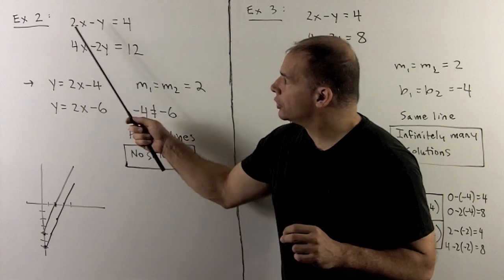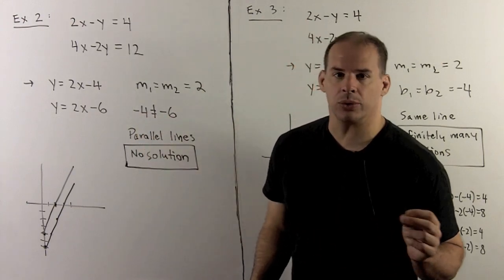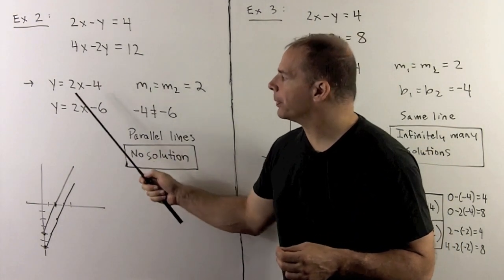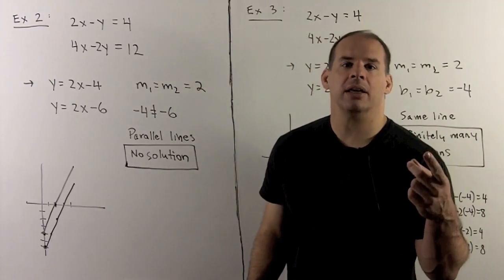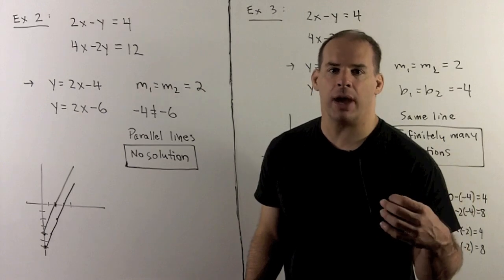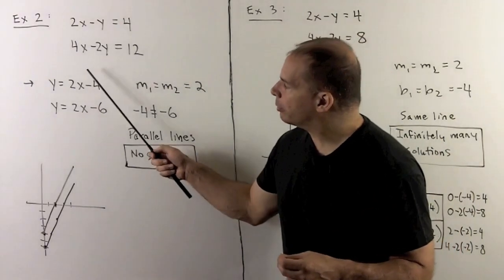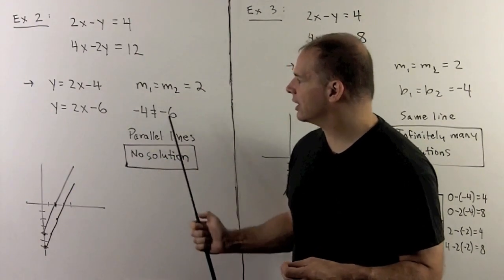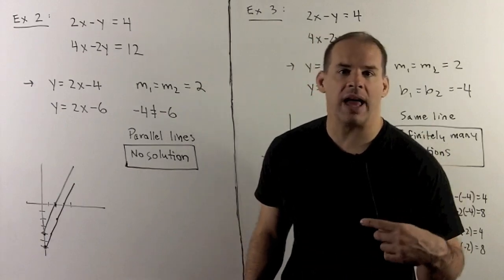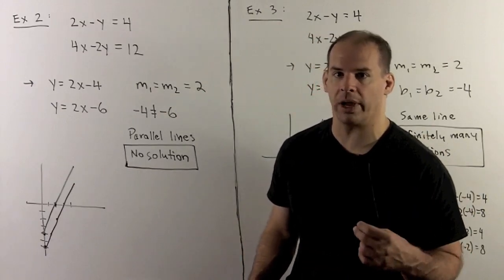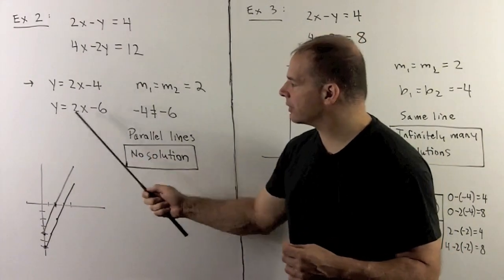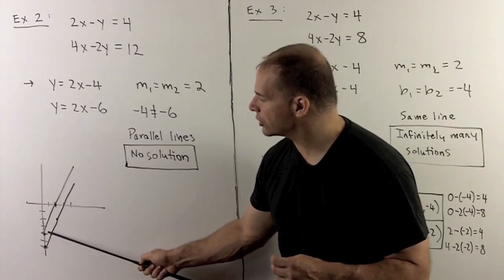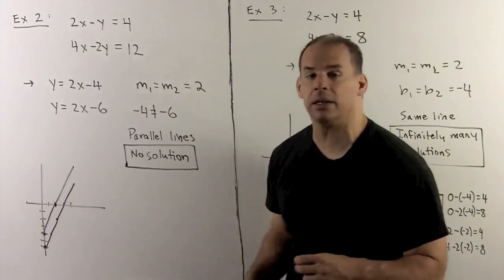Let's try the system 2x minus y equals 4 and 4x minus 2y equals 12. In slope-intercept form: y equals 2x minus 4 and y equals 2x minus 6. Checking slopes and y-intercepts: both slopes equal 2, but the b's are minus 4 and minus 6 — not equal — so we have parallel lines and no solution to this system. We can graph the lines to confirm: both have slope 2, going up 2 over 1, and they are indeed parallel.